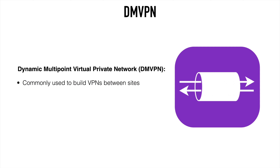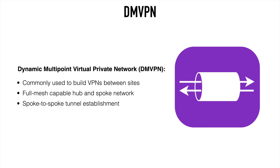DMVPN stands for Dynamic Multipoint Virtual Private Network, and these are commonly used to build VPNs with multiple sites. So if you have a business with multiple branch locations, that would be a common reason you'd use this. This is considered to be a full mesh capable network, meaning that not only do we have communication between the central hub and each spoke location, but we also have the ability to have dynamic spoke-to-spoke tunnels established. This allows the spokes to communicate with one another directly, without having to pass traffic back to the hub, so it's much more efficient.